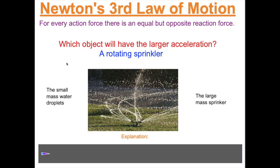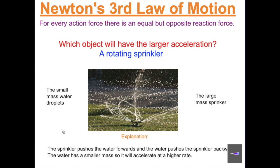When water is pushed out of a rotating sprinkler, the water is pushed forward and the rotating sprinkler is pushed in the opposite direction — backwards. Which object will have a larger acceleration: the small-mass water droplets accelerating forward, or the large-mass sprinkler accelerating backwards? Smaller mass means higher acceleration, so the water will have a higher acceleration than the sprinkler in the opposite direction.